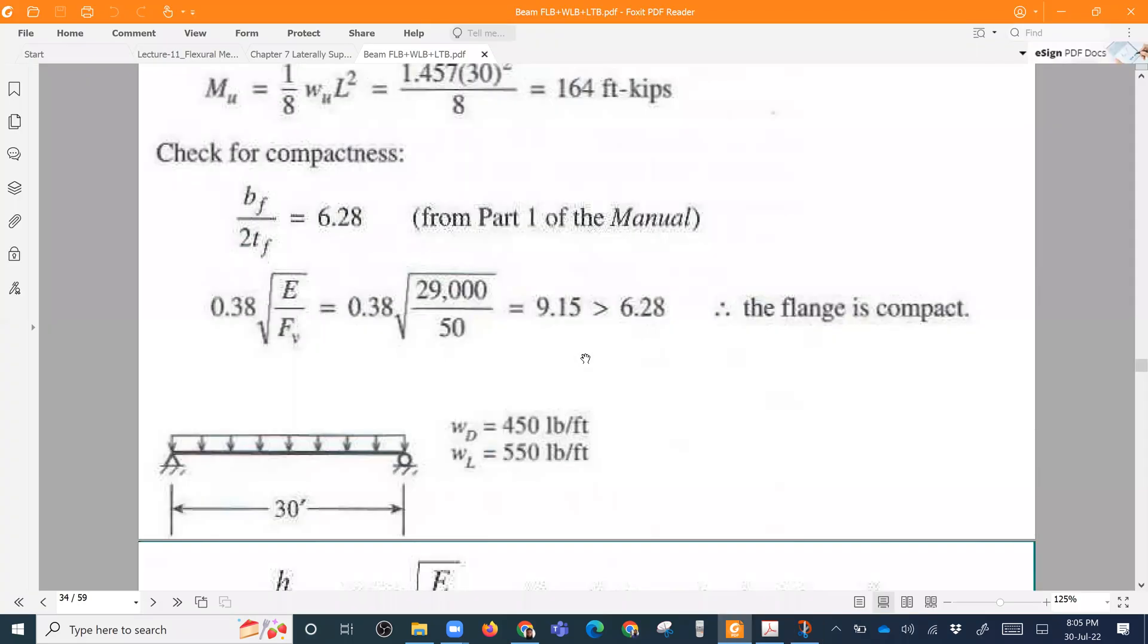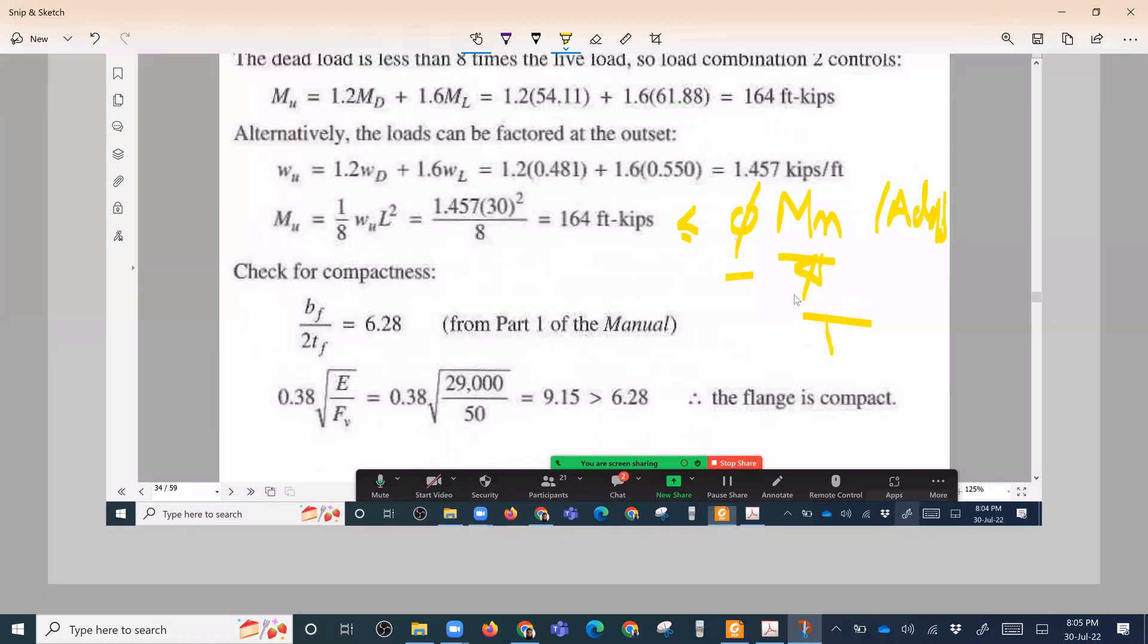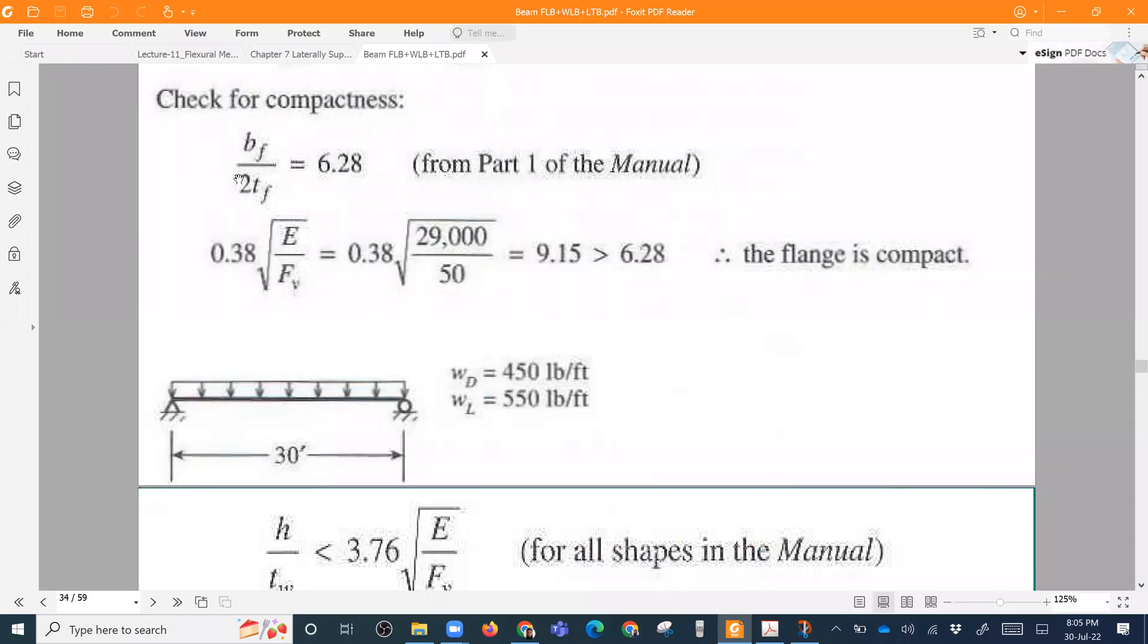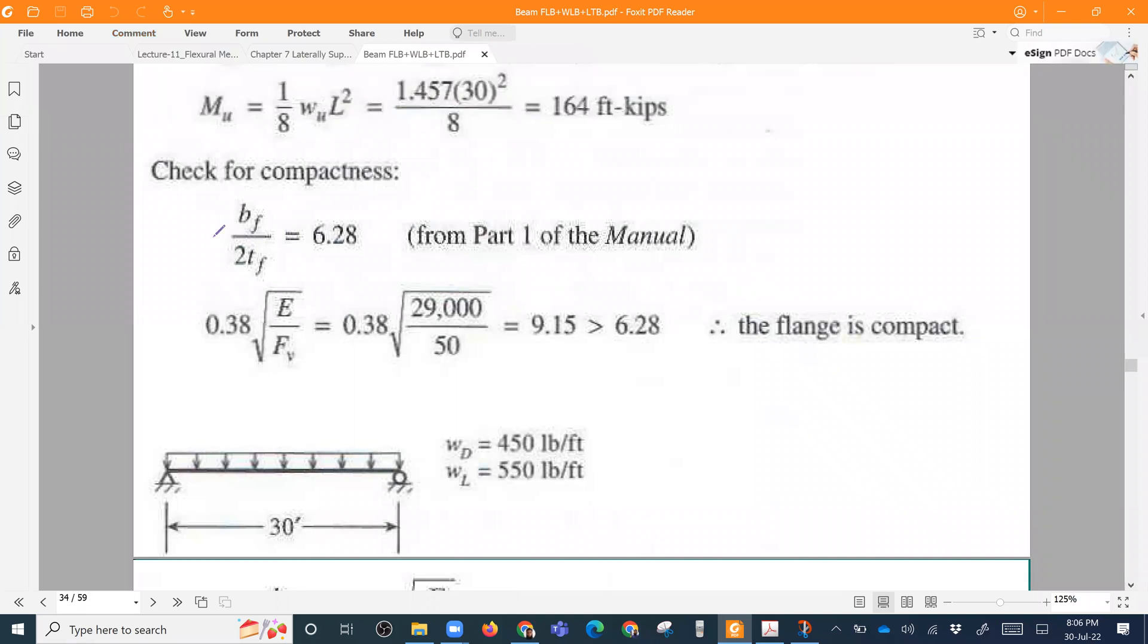So first we will have to check whether the section is compact or non-compact. A section is compact or non-compact, it will depend on whether the flange is compact and whether the web is compact or not. First of all we'll have to check for the compactness. Flange bf by 2tf is 6.28. And now this is my lambda.